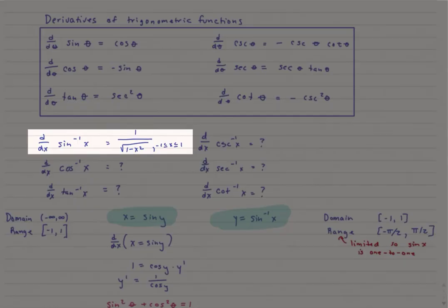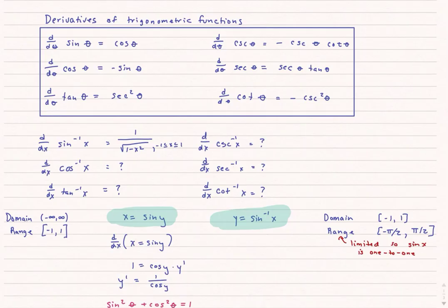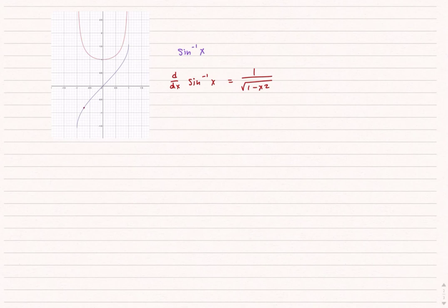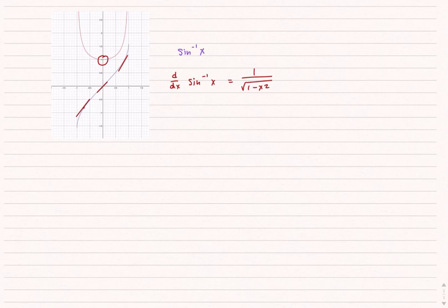I've filled in the first inverse trig derivative. Before moving to inverse tangent, let me show you the graph of sine inverse and its derivative. In purple I have sine inverse of x, with domain negative 1 to 1 and range negative pi over 2 to pi over 2. The derivative of inverse sine is 1 over the square root of 1 minus x squared. Looking at the graph, anywhere along the sine inverse curve the slope is positive, and the derivative graph is entirely above the x-axis — all positive. The lowest value of the derivative is exactly 1 right at x equals 0. The derivative graph does explain the rate of change of the inverse sine function.